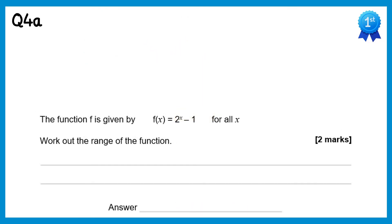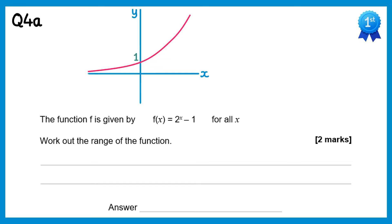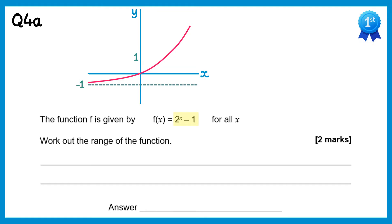For this question I'm going to draw a sketch of y equals 2 to the x. It crosses the y-axis at 1 but never reaches the x-axis. The function we've been given is 2 to the x minus 1, so we translate the graph down 1. It will now cross the axis at the origin, and rather than never meeting the x-axis, it will never meet the line y equals negative 1. So the range is f(x) greater than negative 1.